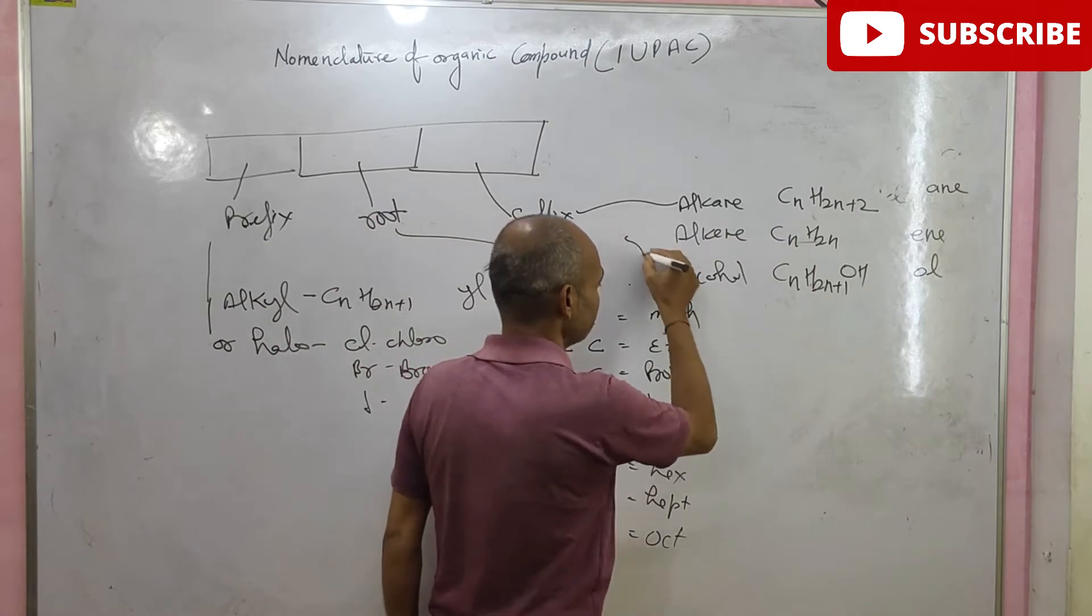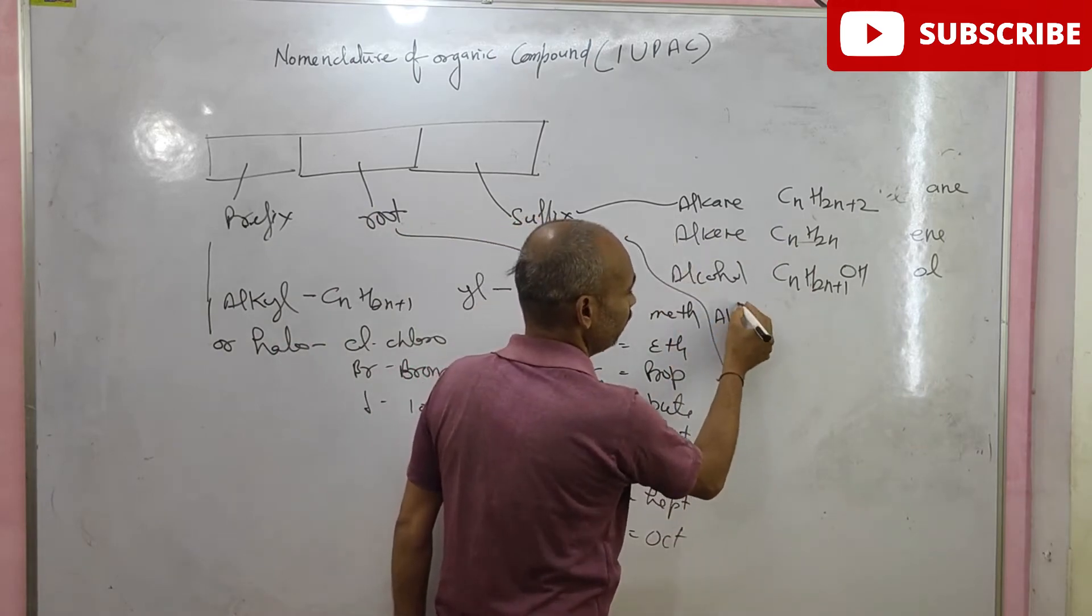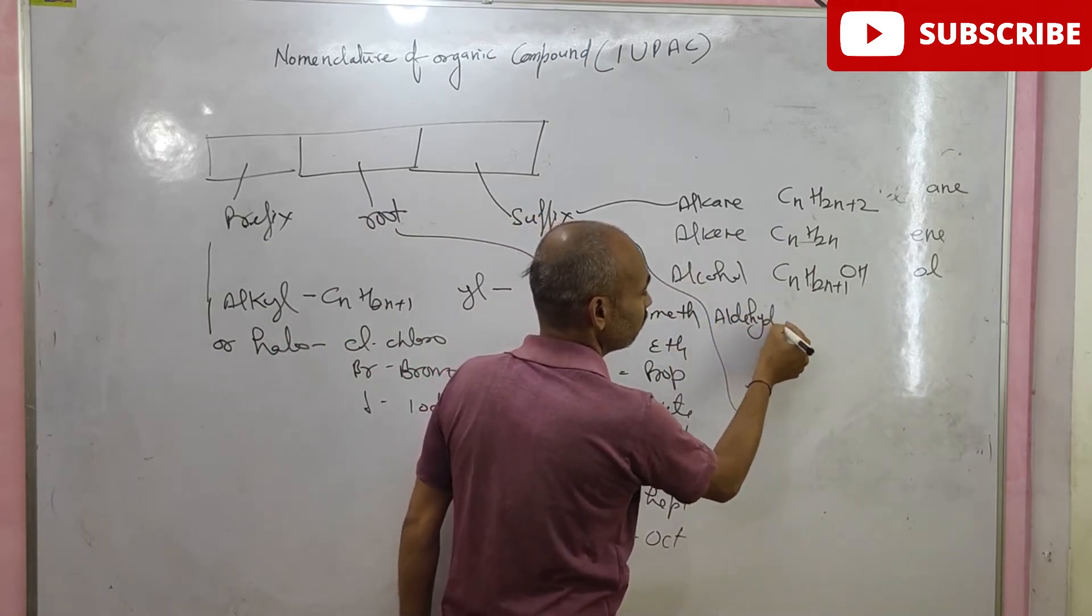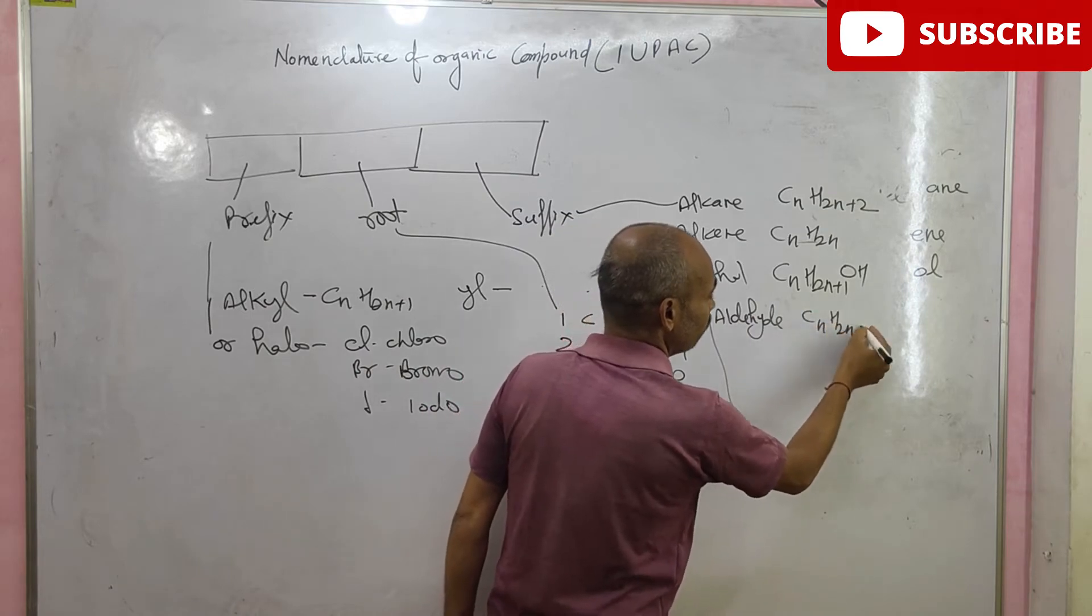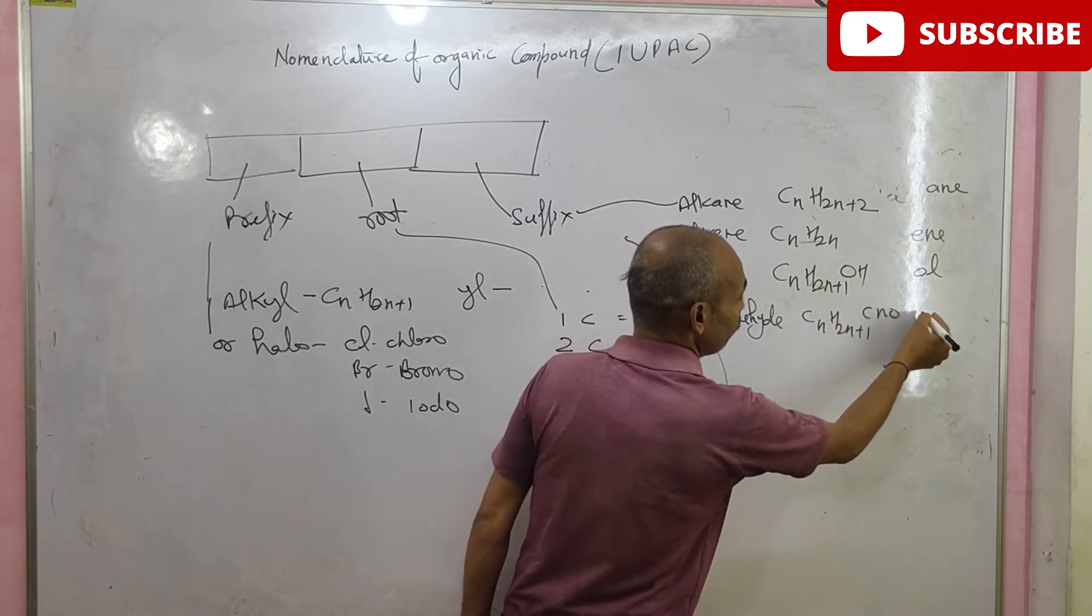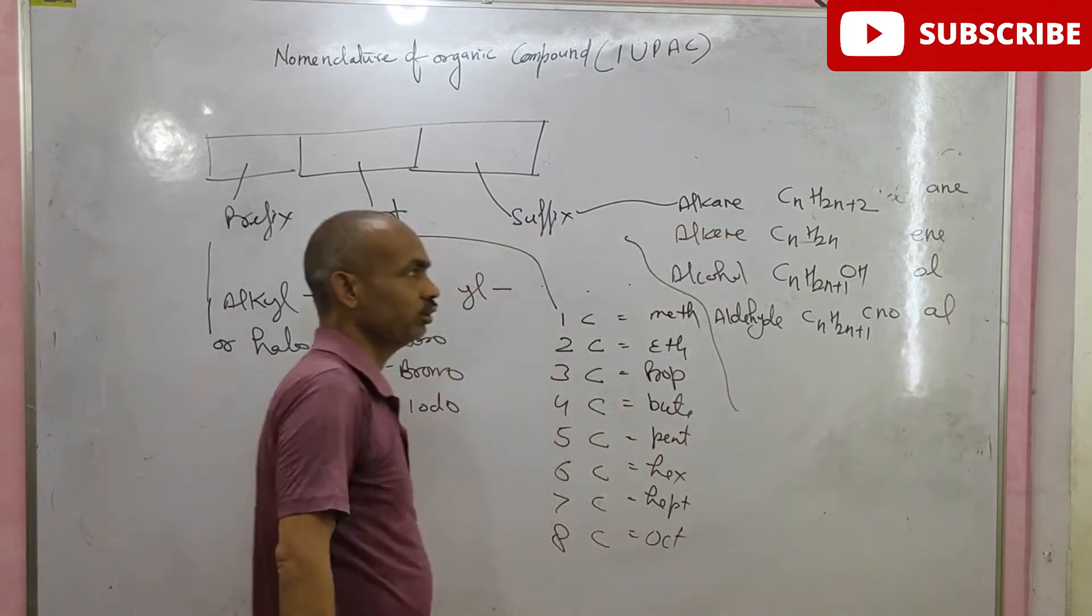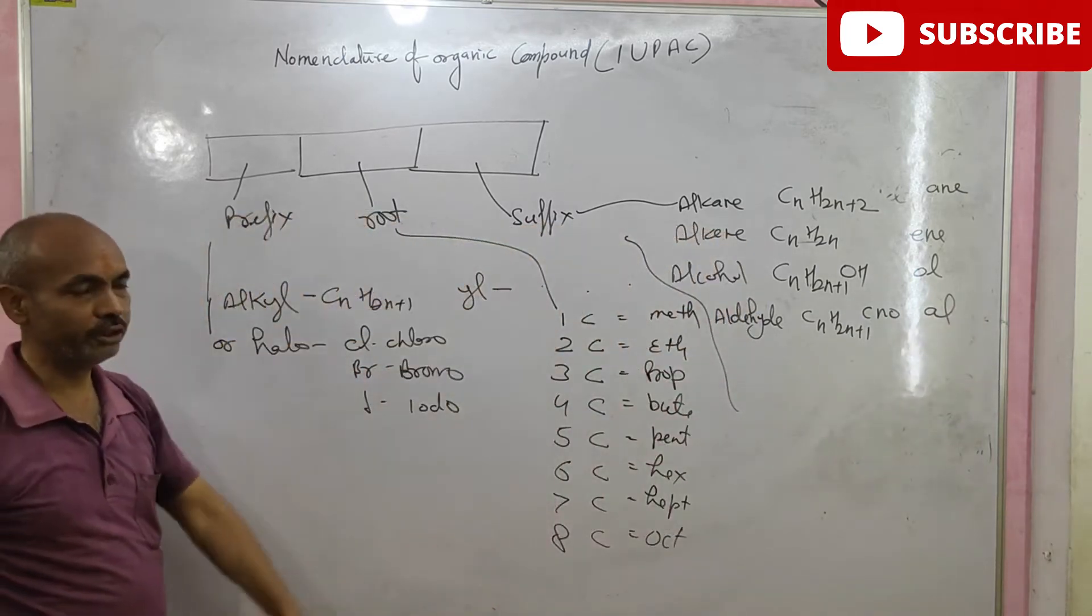Aldehyde: CNH2N plus 1 CHO. And general name al.